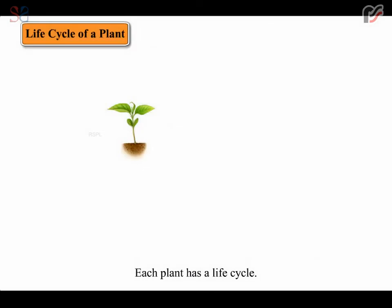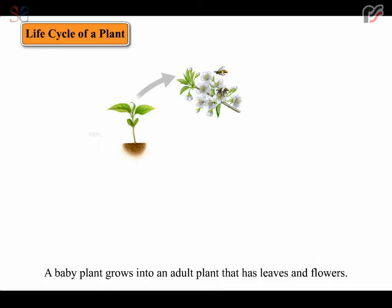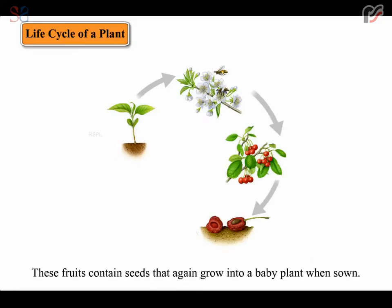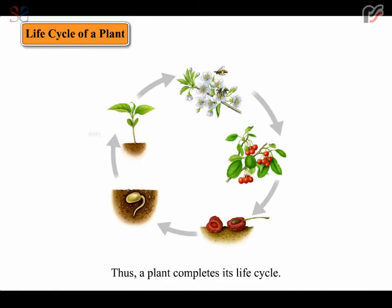Each plant has a life cycle. A baby plant grows into an adult plant that has leaves and flowers. Flowers change into fruits. These fruits contain seeds that again grow into a baby plant when sown. Thus, a plant completes its life cycle.